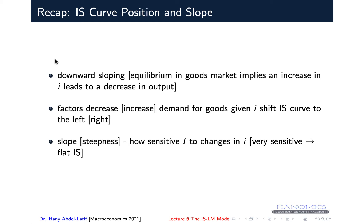Anything that would shift aggregate demand upward would shift the IS curve to the right, and anything that shifts aggregate demand downward would shift the IS curve to the left. The slope or steepness of the IS curve depends on how sensitive investment is to changes in the interest rate. If investment is very sensitive — meaning a small change in interest rate brings much larger changes in investment — that would imply a flatter IS curve.